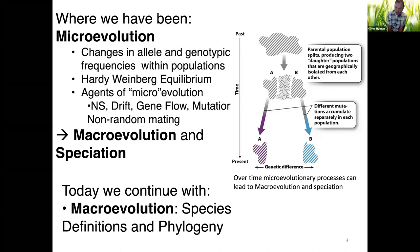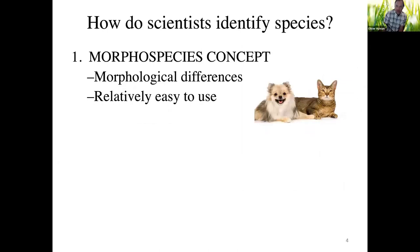We're going to continue by talking about species definitions and phylogenetic trees. There are a couple of different species concepts — different ways to define or identify a species. One of the first is the morphospecies concept. Morpho refers to morphology — your physical appearance. This concept basically uses the physical appearance of organisms to define one species versus another based on morphological differences.